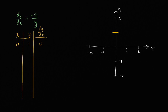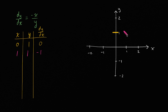What about when x is one and y is one? Well then dy/dx, the derivative of y with respect to x, is negative one over one, so it's going to be negative one. At the point (1, 1), if a solution goes through that point, it would have a slope of negative one. So I draw a little line segment that has a slope of negative one.